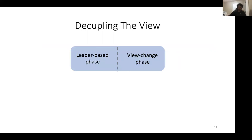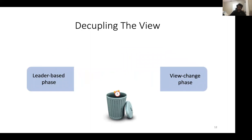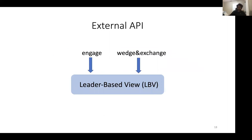In the first step, we take a single view of the view-by-view protocol and decouple it. A single view consists of two phases: the leader-based phase, in which the leader tries to drive progress, and the view change phase. Existing algorithms use timeouts to move from the first phase to the second. We decouple the two phases and get rid of the timer by defining the LBV — Leader-Based View — abstraction, which exposes an external API to engage, to start the view, and to wedge-and-exchange.